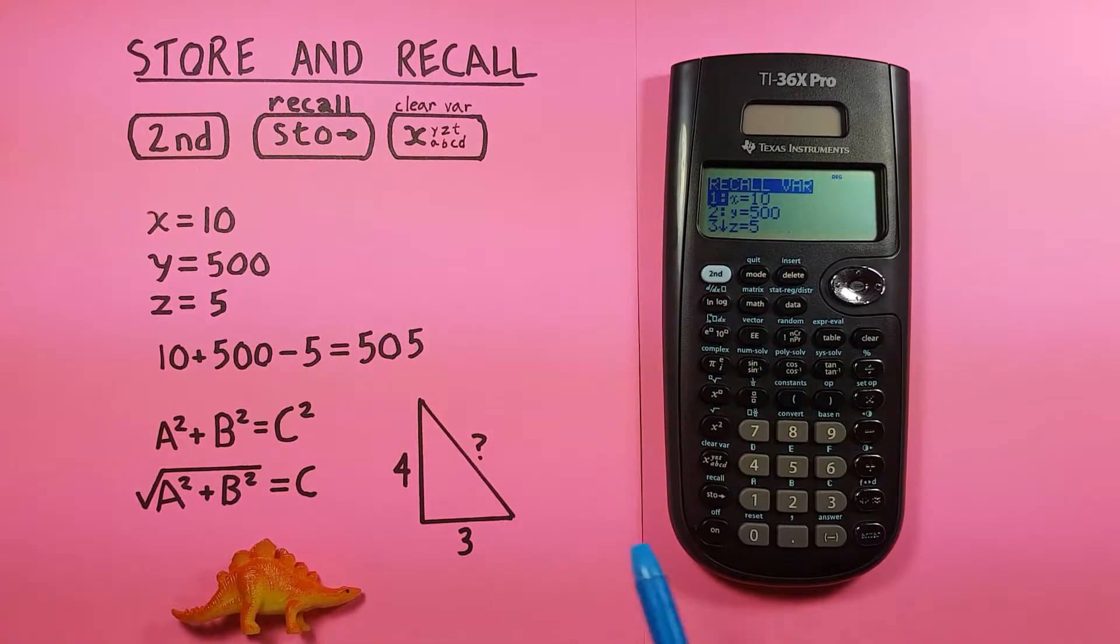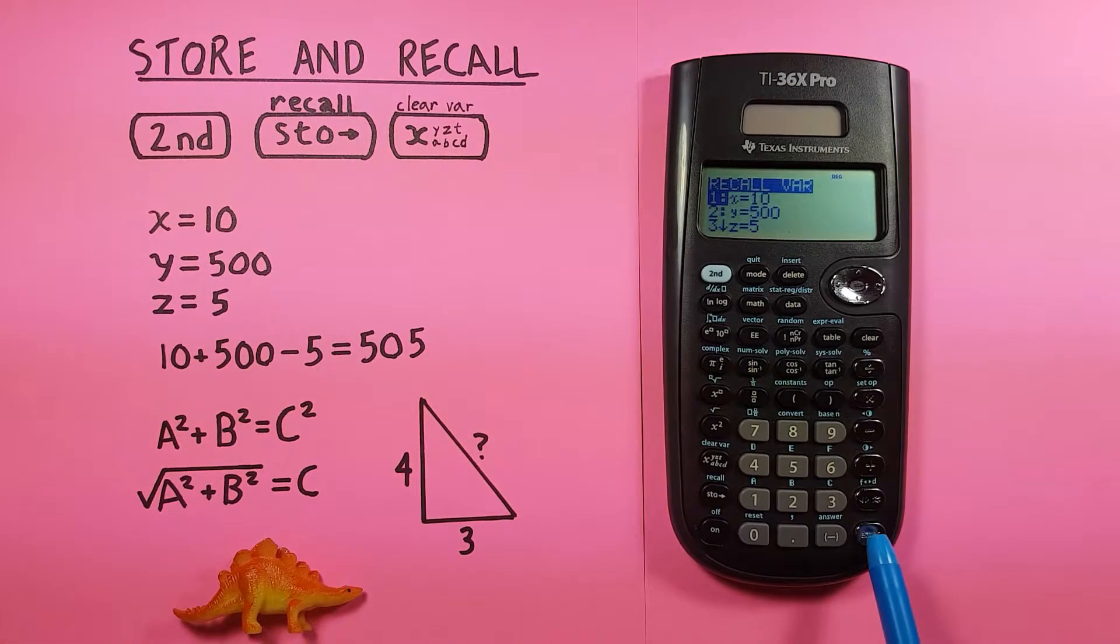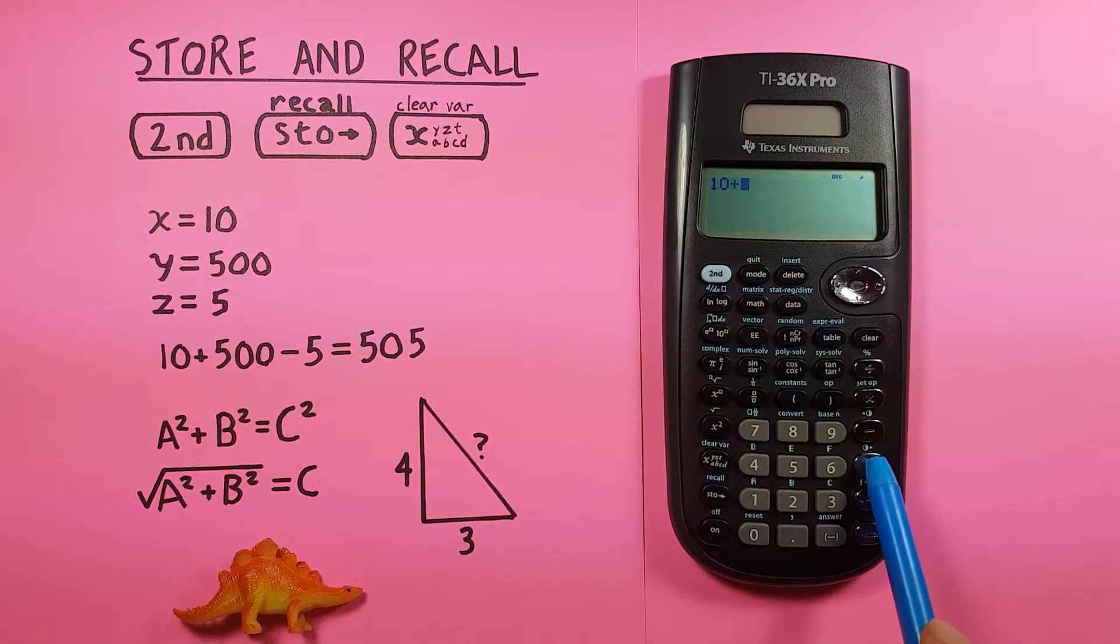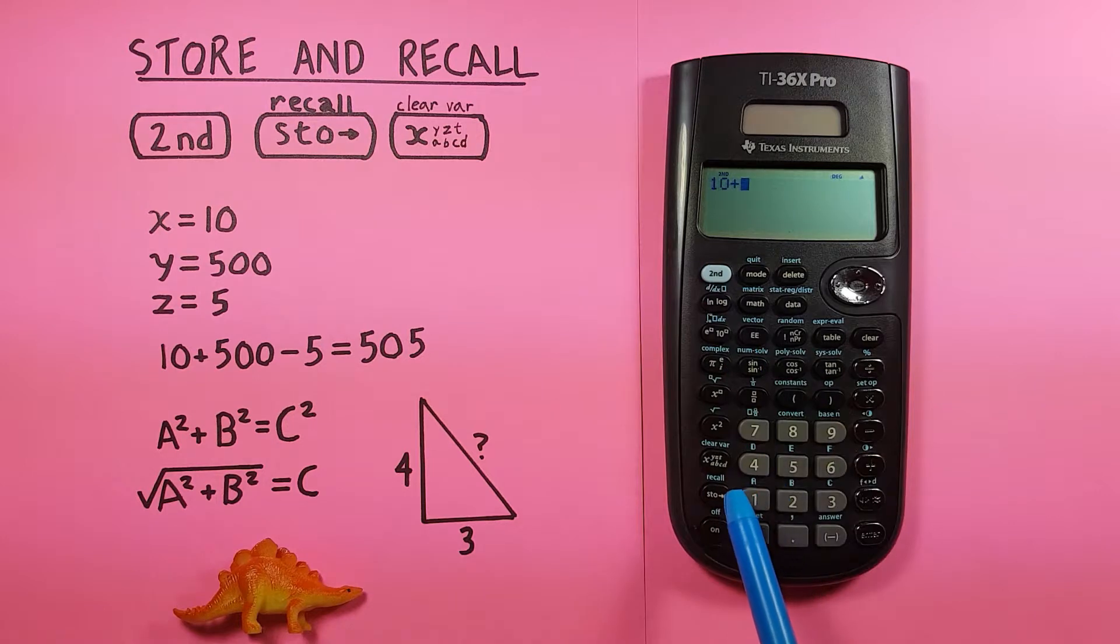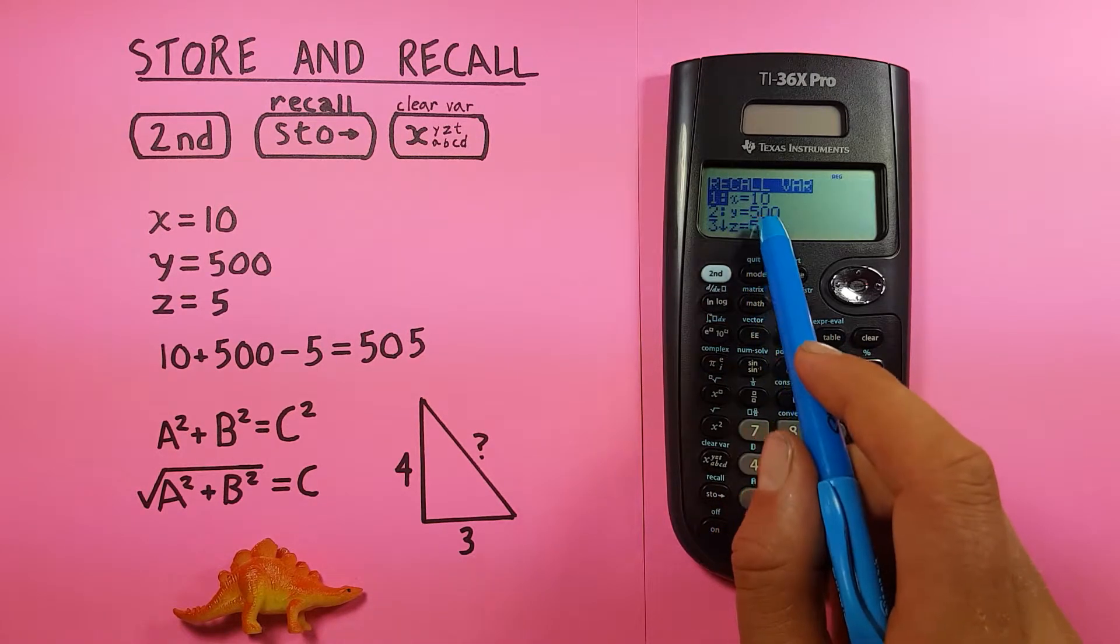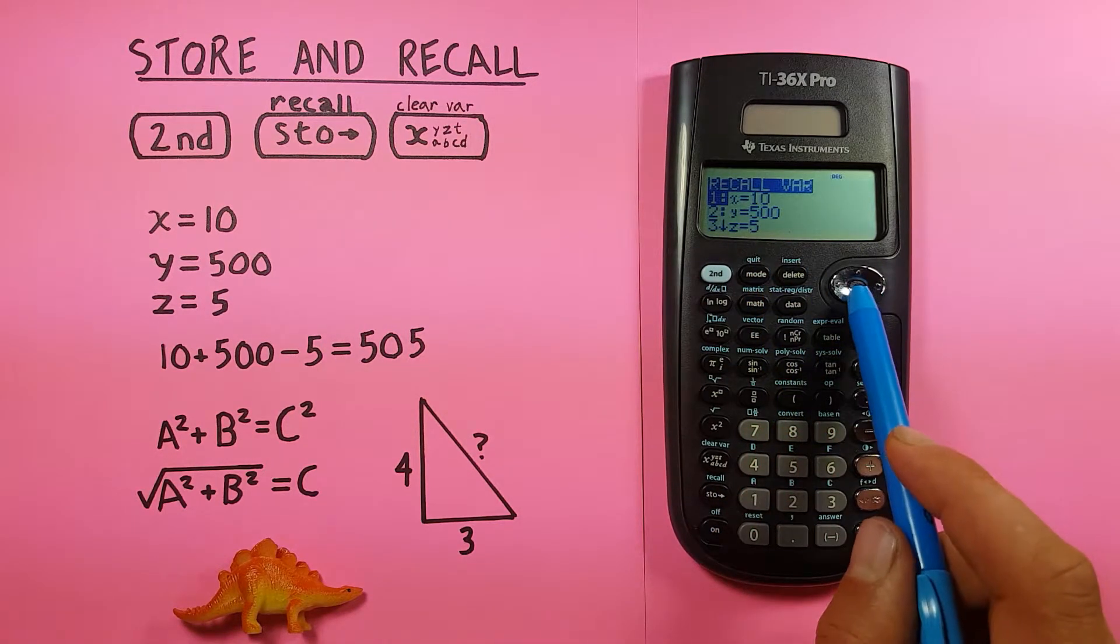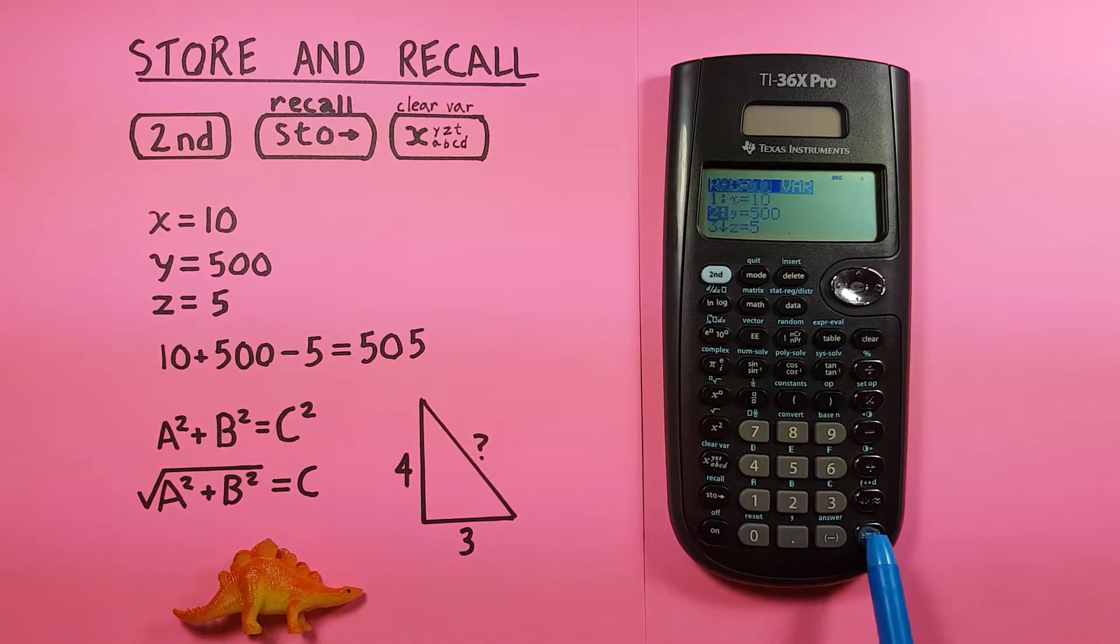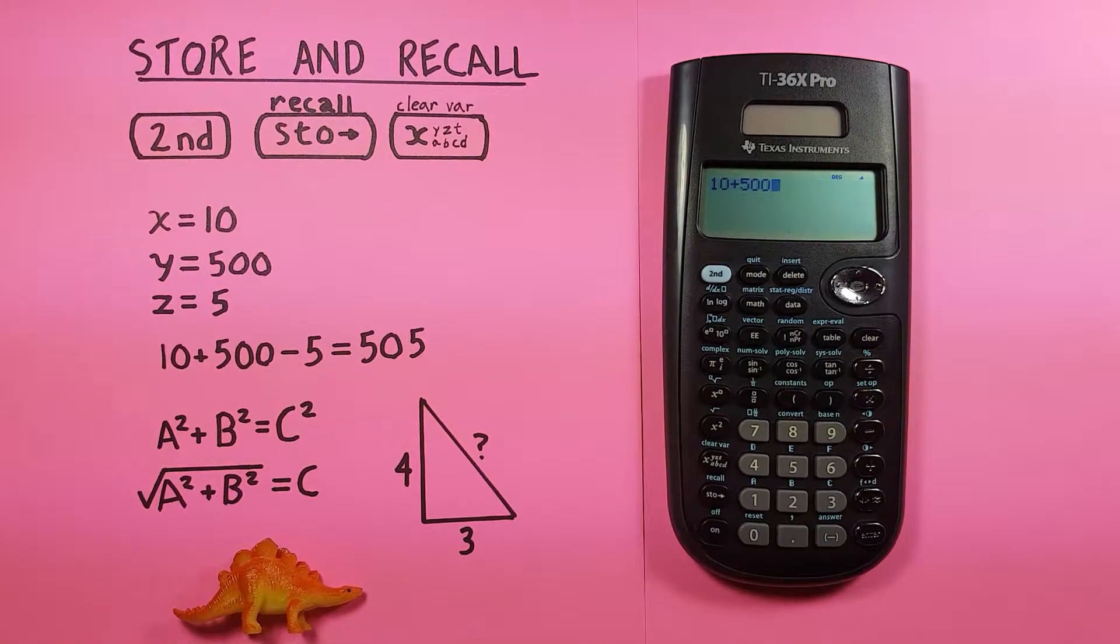Well, we can use second function recall to bring back our menu, and you can see the first one is 10, which was our X value, which is what we want, so you can press enter, plus second recall 500, which is our Y value, so you can press down and enter, or you can just press the 2, because that was the second value.